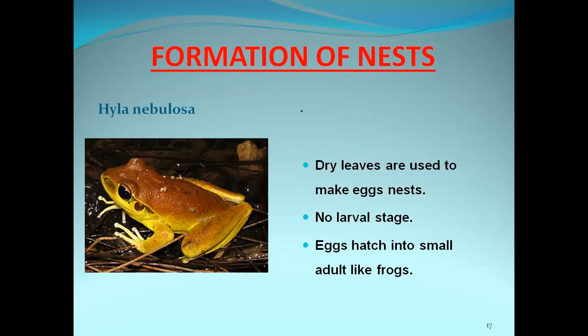The next example for this second category is Hyla nebulosa. Hyla nebulosa uses dry leaves to make an egg nest. By using dry leaves, they construct a nest, and in this nest they lay the eggs. The special feature of this organism is that there will be no larval stage — the eggs directly hatch into small adult-looking frogs. This is a very special feature of Hyla nebulosa, constructing a nest with the help of dry leaves.